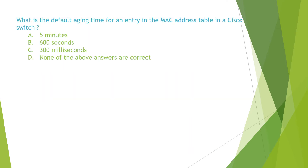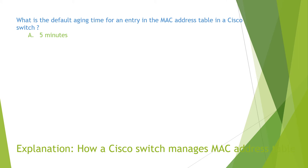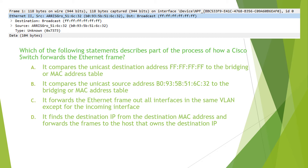The question reads: what is the default aging time for an entry in the MAC address table in a Cisco switch? The default aging time is 300 seconds, or 5 minutes. Therefore the answer is A. You can find the detailed explanation in the video 'How a Cisco Switch Manages MAC Address Table.'